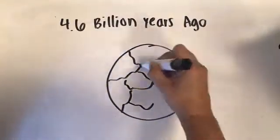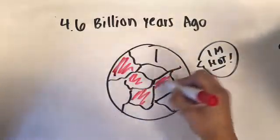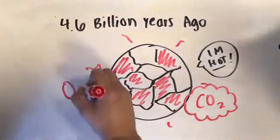It all began long ago, just after the Earth formed, which was around 4.6 billion years ago. The Earth was extremely hot with a molten surface. Volcanoes were erupting, and the atmosphere was mostly composed of carbon dioxide with no oxygen.